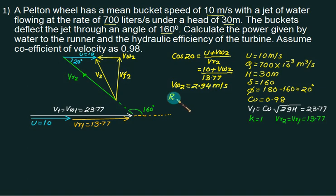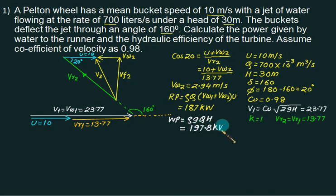We can solve for Vw2, so we get Vw2 equal to 2.94 meters per second. Runner power is rho into Q into (Vw1 plus Vw2) into U. Rho is 1000, Q is 700, substitute values to get approximate power equal to 187 kilowatts. Water power is rho into g into Q into H, which comes out to be 206 kilowatts. Hydraulic efficiency is runner power divided by water power, multiply by 100, you will get this answer very close to 90.7 percent.